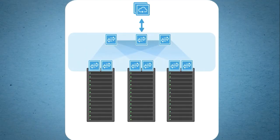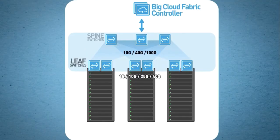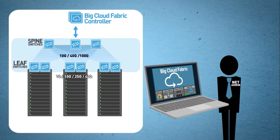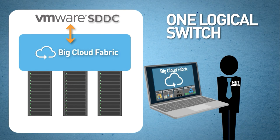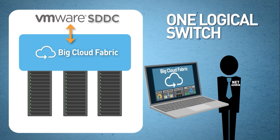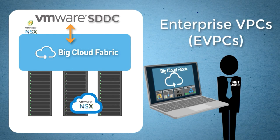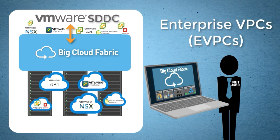Big Cloud Fabric is powered by an STN controller to build a leaf-spine fabric using open networking switches. Unlike box-by-box networks, Big Cloud Fabric provides a single pane of glass and integrates with various VMware STDC products, operating the entire fabric as a single logical switch. It leverages cloud networking principles using the construct of virtual private cloud like AWS VPC for logical isolation across multiple tenants. The controller uses enterprise VPCs or eVPCs for each VMware deployment, allowing logical isolation and multi-tenancy.